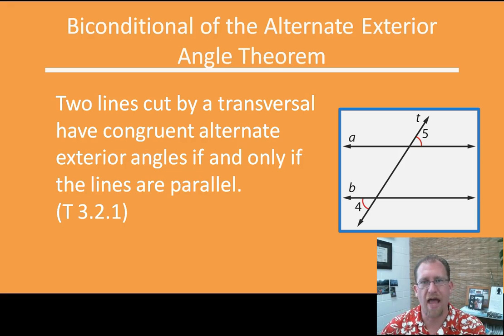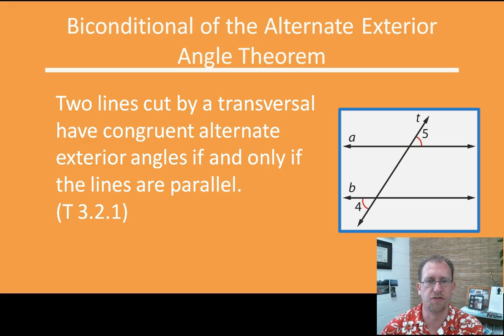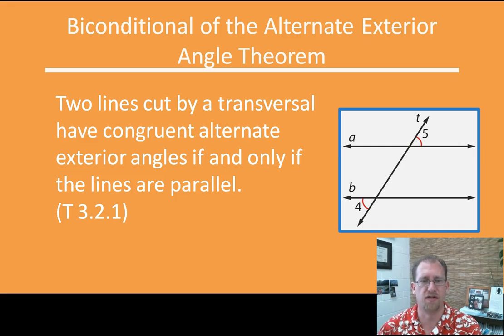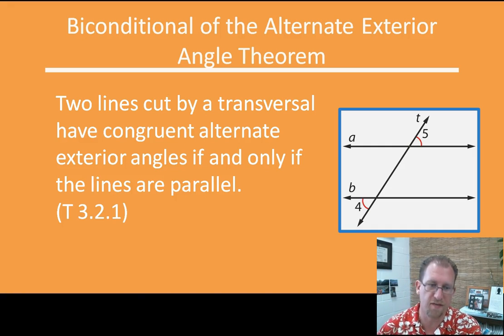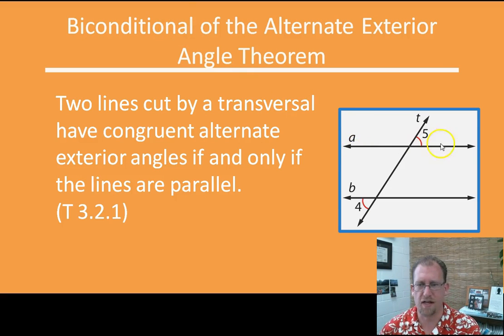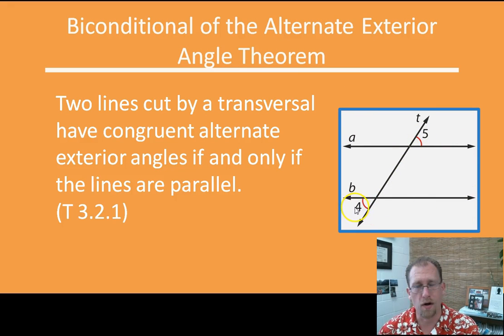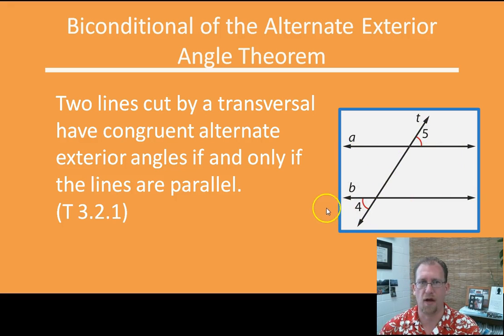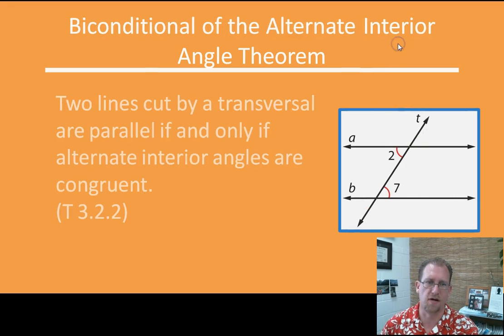Now we're looking at alternate exterior angles, and this is going to be a biconditional of the alternate exterior angle theorem that you learned yesterday. Two lines cut by a transversal have congruent alternate exterior angles if and only if they are parallel. That allows you to go both directions — if the lines are parallel, these angles are the same, or if these angles are the same, then these lines are parallel. So we're just being able to walk forward or backward through these concepts.